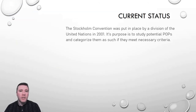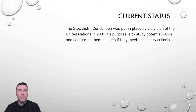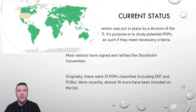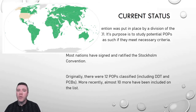Thanks to the Stockholm Convention, there is an international system in place for the classification of persistent organic pollutants. It was first put in place by a division of the United Nations in 2001, and its purpose was to study what might be POPs and then ultimately classify them so they could be tracked. A number of POPs have, in fact, been banned thanks to their recognition under the Stockholm Convention. Most nations have signed and ratified it, with a couple of exceptions — the United States has signed on to it, but has not ratified it, meaning the U.S. doesn't need to adhere to its stipulations. Originally 12 POPs were classified, including DDT and polychlorinated biphenyls, but more recently 10 more have been included on that list.